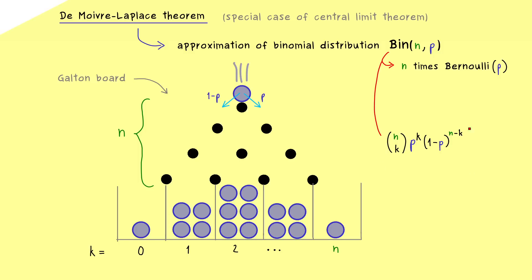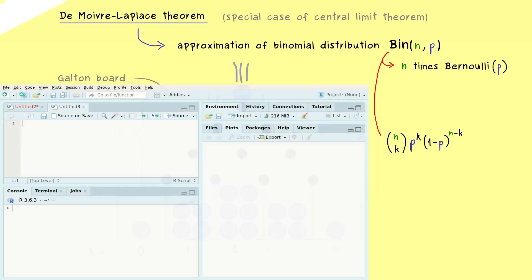So it's a discrete probability distribution, but the central limit theorem now tells us that we can approximate the whole thing by a continuous bell curve. And in order to see this more concretely, let's go to R Studio again.